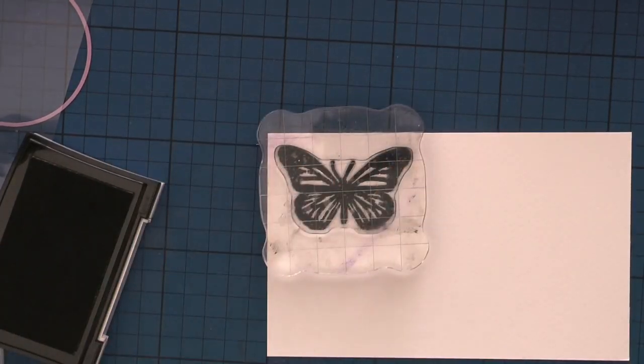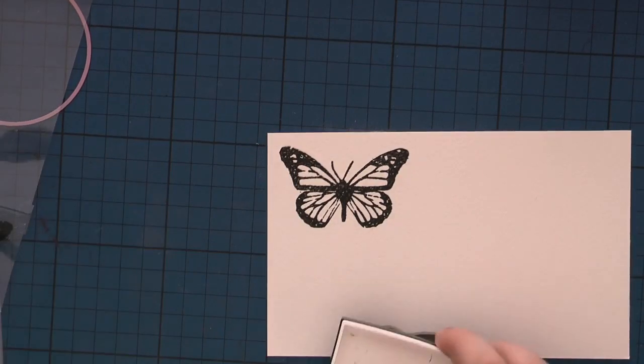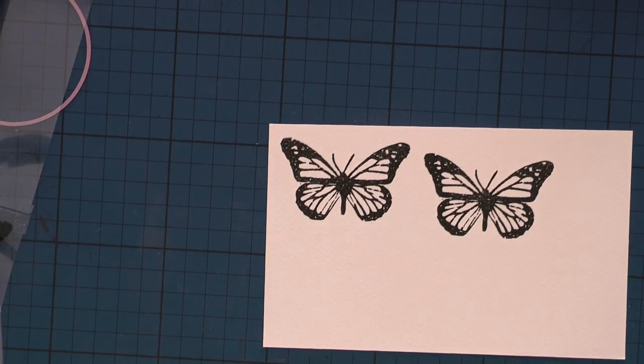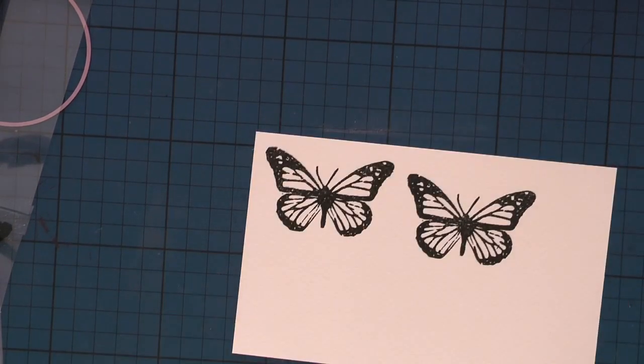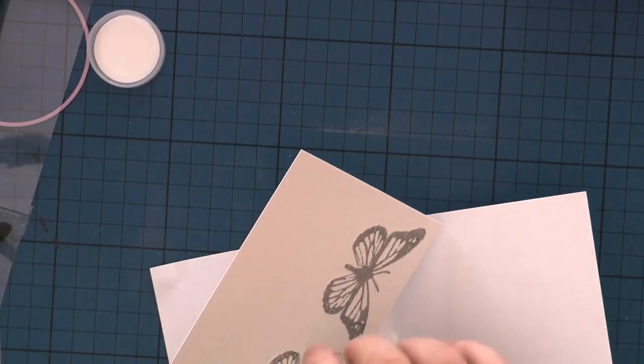That is because I'll be using Stabilo 68 pens to color the butterfly in. I'm going to clear emboss it using my heating tool and Wow clear embossing powder.